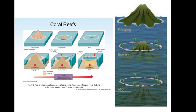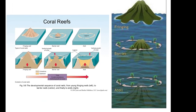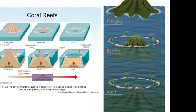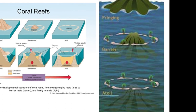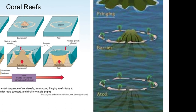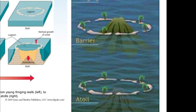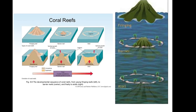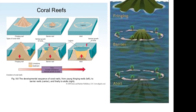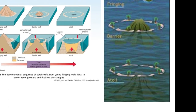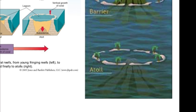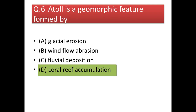Gradually, as more and more corals accumulate, it forms a barrier reef. And in the last step, when the landmass completely subsides into the ocean, the geomorphic feature formed by coral reefs is called an atoll. So atolls are formed by coral reef accumulation.